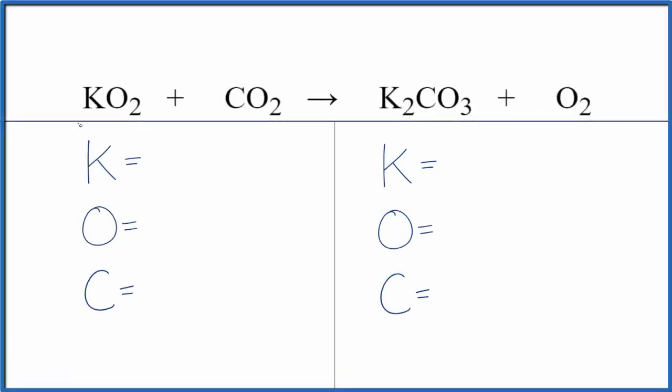To balance this equation, we have KO2 plus CO2. This is potassium superoxide plus carbon dioxide. So this is a bit challenging. Let's count the atoms up first and then balance the equation.